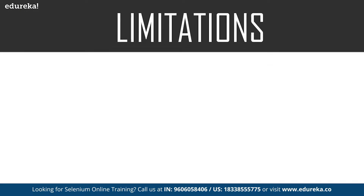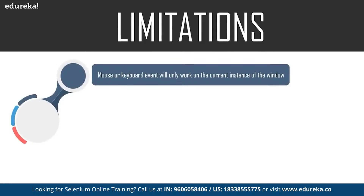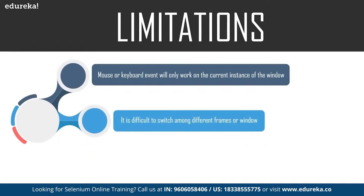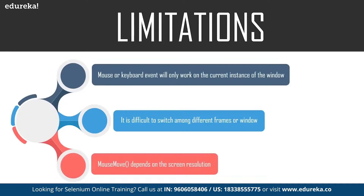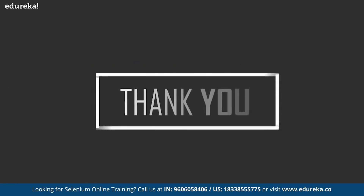The limitations of this robot class are: the mouse or keyboard event will work only on the current window, and it is difficult to switch among different screens or windows. For example, if a robot event is executing but the code execution moves to another window, the mouse or keyboard event will still remain on the previous window. Methods like mouseMove depend on screen resolution — if you're using XY coordinates for your tests, the test will behave differently on different screens. And if you're running your tests in a virtual machine, the script failure rate is higher.